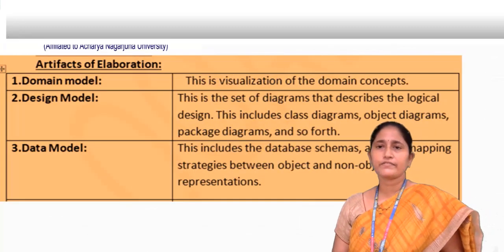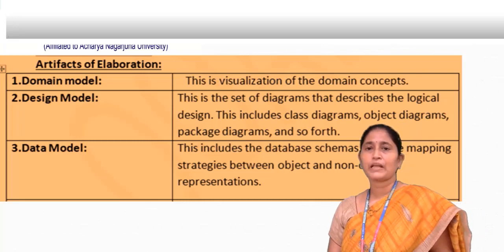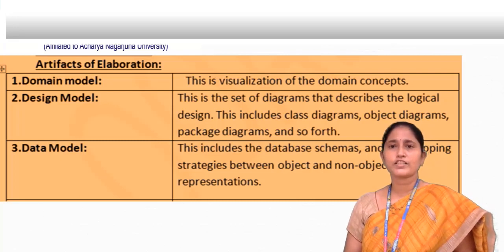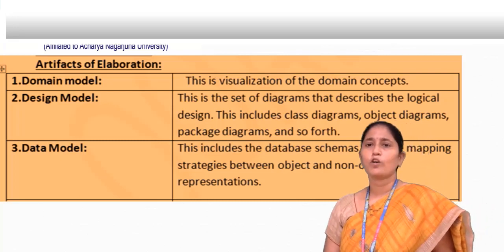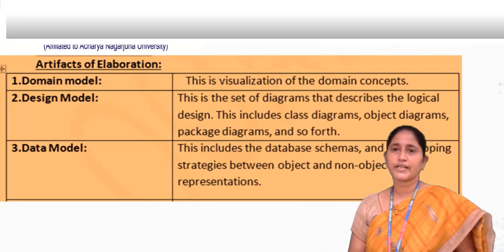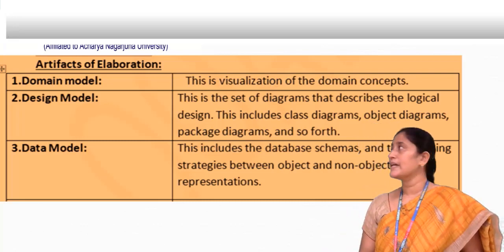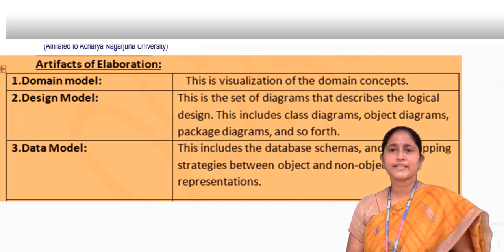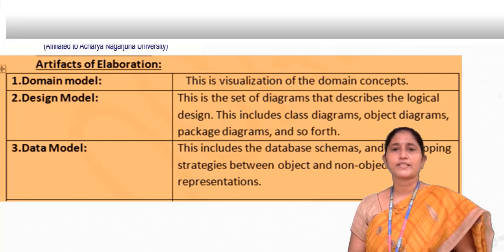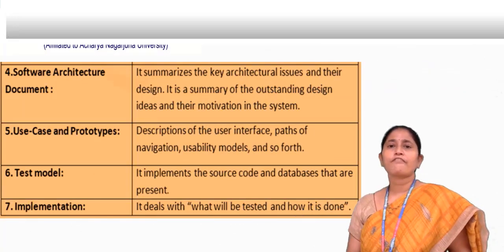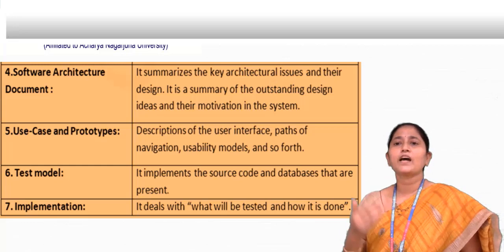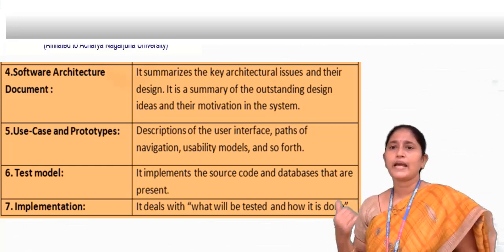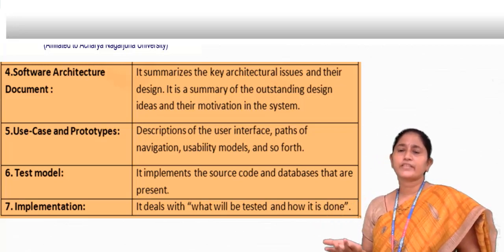The domain model is a visualization of domain concepts. The design model is a set of diagrams that describes a logical design, including class diagrams, object diagrams, package diagrams, and so on. The data model includes the database schemas and mapping strategies between the object and non-object representations. The software architectural document summarizes the key architectural issues and their design — it is a summary of the outstanding design ideas and their motivation in the system.